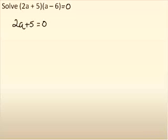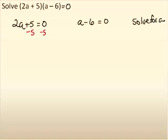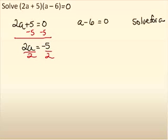2a plus 5 equal to zero, and then a minus 6 equal to zero. And you just solve both for a. We're going to solve for a. So, solving the first one for a, I have to subtract 5 from both sides. And that gives me 2a equal to negative 5. Divide both sides by 2, and we get a equal to negative 5 over 2.